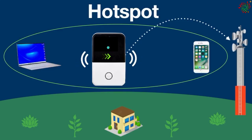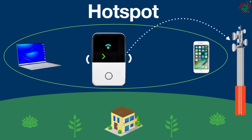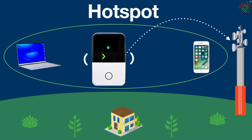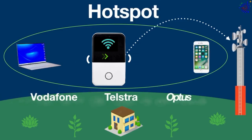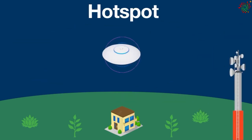Mobile hotspots come in two different types: they can be either a standalone product, like this one, or built into your smartphone, as mentioned earlier. It is also important to note that mobile hotspots work with cell phone carriers such as Vodafone, Telstra, Optus, and so on. Mobile hotspot devices often deliver better performance than phone tethering.